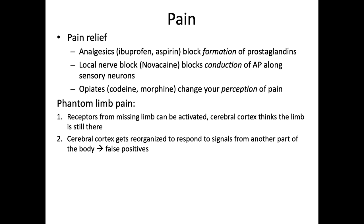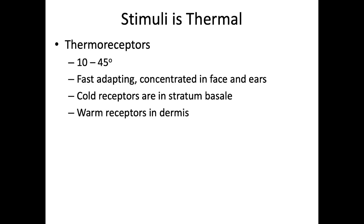There are two different types of thermal receptors: cold receptors and warm receptors. They respond to a relatively moderate range of temperatures. You have many more cold receptors than warm receptors, and the greatest concentration of thermoreceptors is found in the face and ears. Thermoreceptors are generally free nerve endings — cold receptors are found in the stratum basale and warm receptors are found in the dermis. They are rapidly adapting receptors, which is why a warm shower seems really hot at first and then tends to not feel so hot after a few minutes.